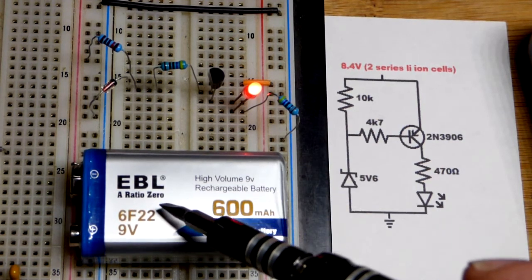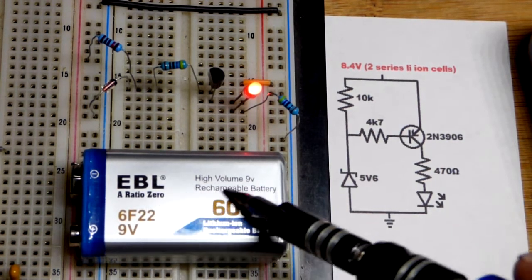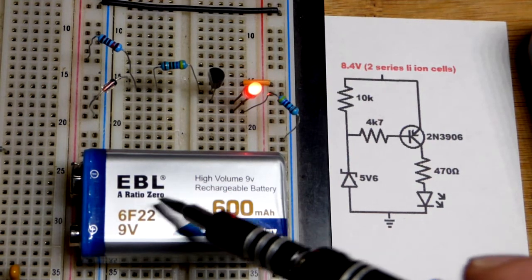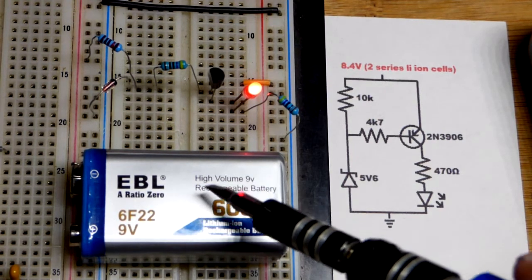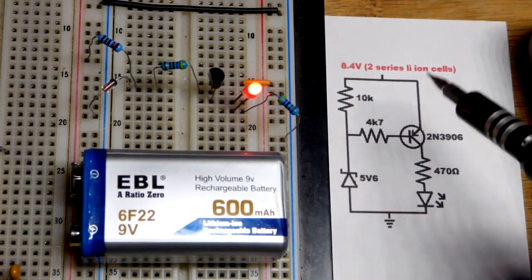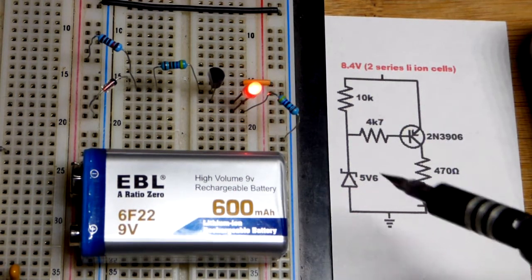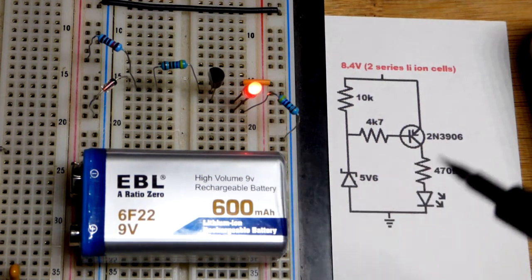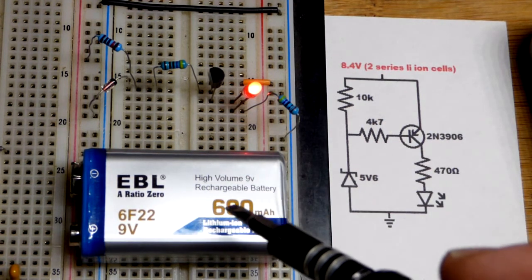And if it discharges below 2.5 volts per cell, 5 volts total, that could damage the battery. So it's important to shut off the circuitry, usually somewhere closer to 6 volts. We're going to see this is close to 6.2 volts because you don't have much energy stored in the battery anymore. So by 6 volts anyways.